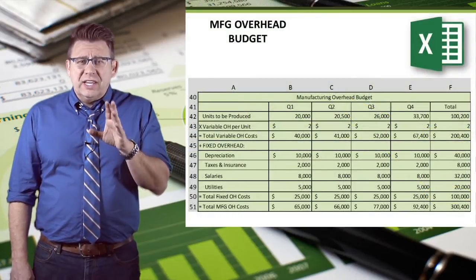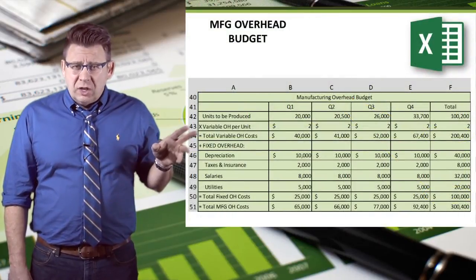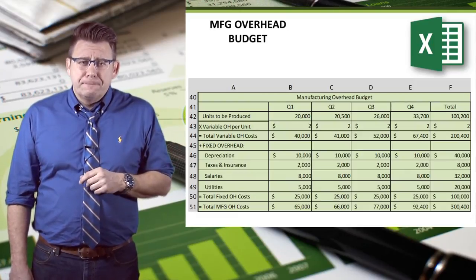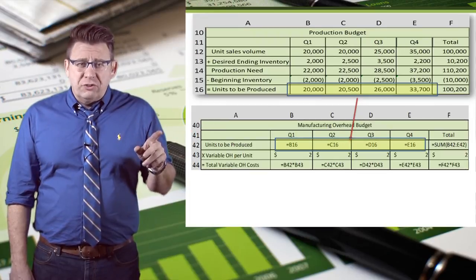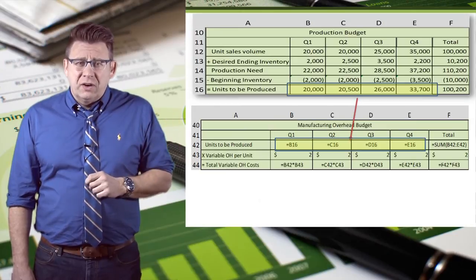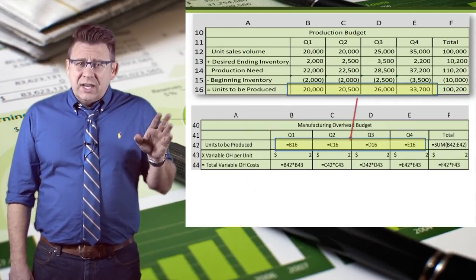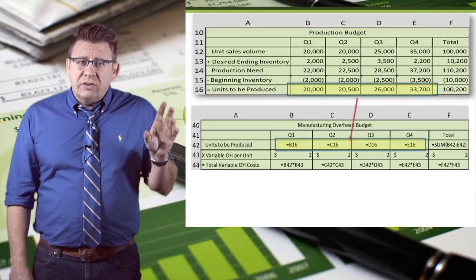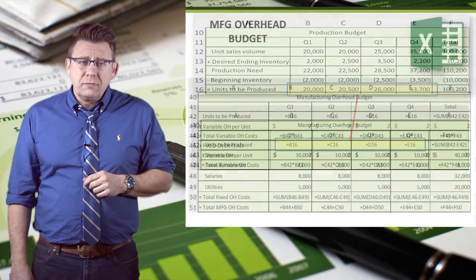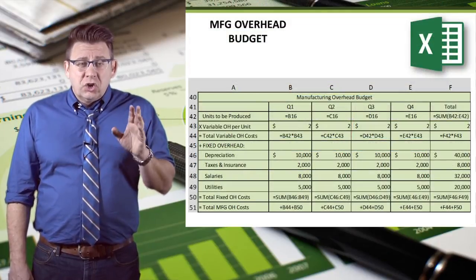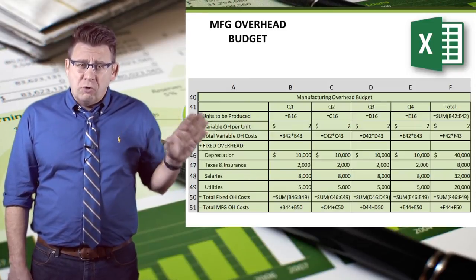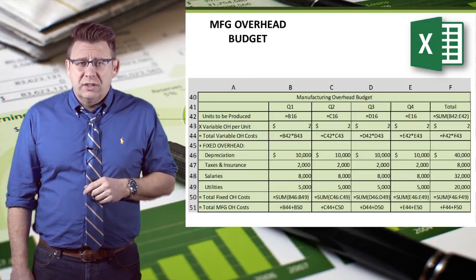Let's look at how we would do this in Excel. Notice the column letters and the row numbers — we'll reference those as we build this budget. Here we have both the Production budget and the Manufacturing Overhead budget. We start by linking the two budgets together, with units to be produced linked to the same cells in the Production budget. Total Variable Overhead costs, Total Fixed Overhead costs, and Total Manufacturing Overhead costs are all formulas, as shown. Some of the numbers I've assumed to keep this example straightforward.